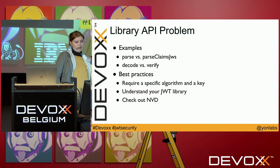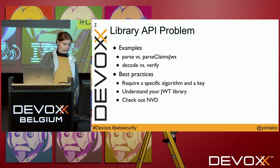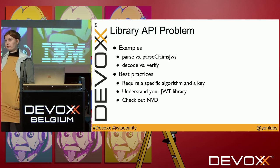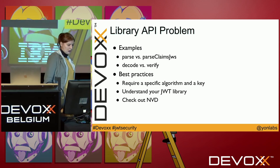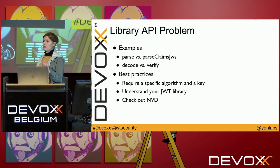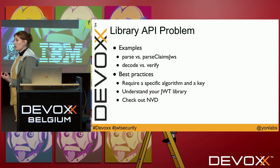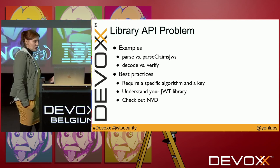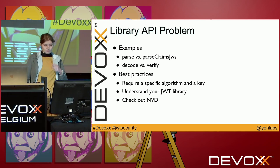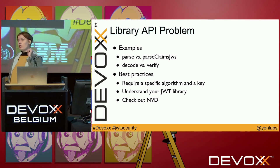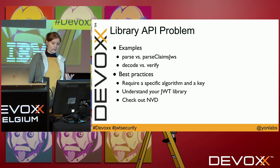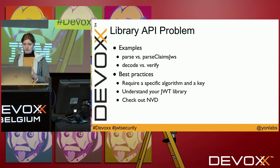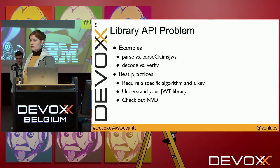There are more libraries with API problems. One has this issue with parse versus parseClaimsSecure. Another library provides two functions — decode and verify. Decode simply does base64 decoding, while verify fully verifies the signature. So if you are new to a library, you might reach for the first function that fits your purposes, and it might be the wrong one. The best practice includes requiring a specific algorithm and a specific key during the verification step, and understanding your JWT libraries. Check the National Vulnerability Database to discover potential vulnerabilities in tools you're using.